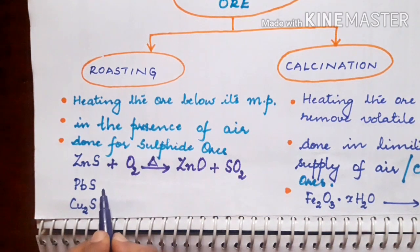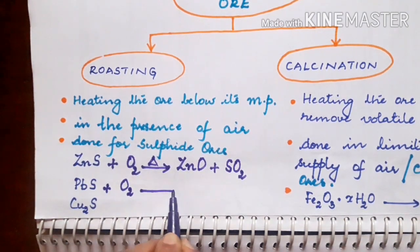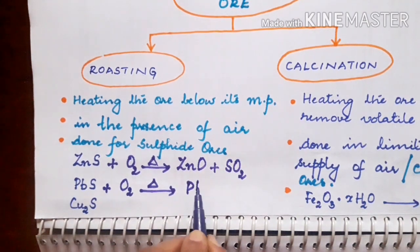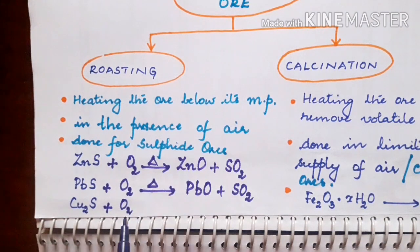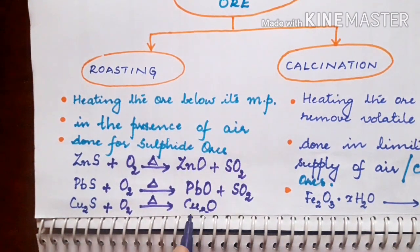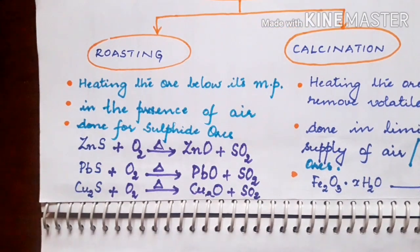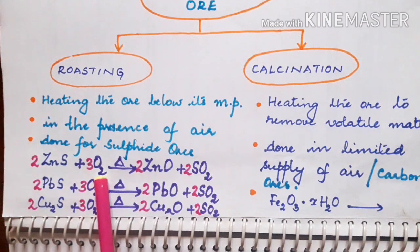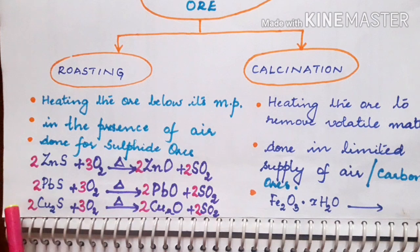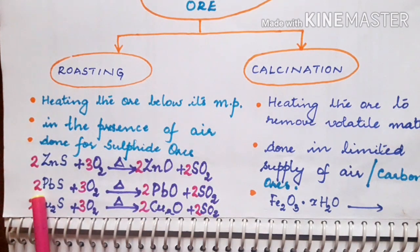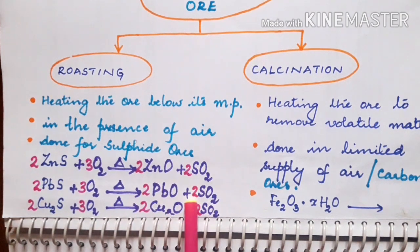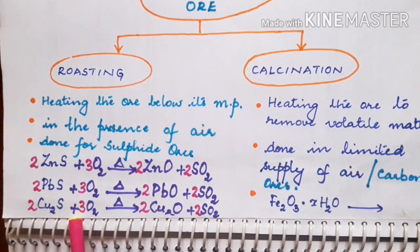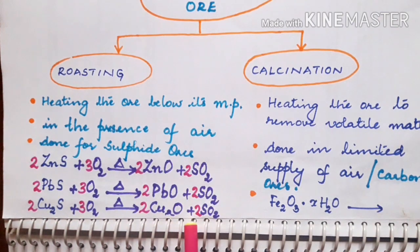Same way, when lead sulfide is subjected to roasting, it is heated in the presence of air and gets converted to lead oxide and sulfur dioxide. Now cuprous sulfide when it reacts with oxygen will be converted to cuprous oxide and sulfur dioxide. All the cases you have to balance the equation. 2ZnS + 3O2 gives 2ZnO + 2SO2. Lead sulfide: 2PbS + 3O2 on heating gives 2PbO + 2SO2. 2Cu2S + 3O2 giving 2Cu2O + 2SO2.